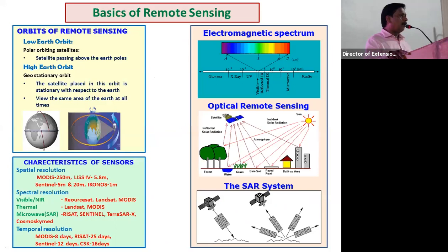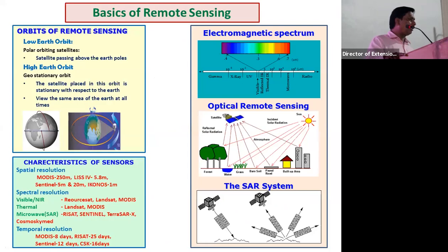For your information, I am covering the basics of remote sensing. Most of you know that satellites are used for assessing objects over the air. There are two types of satellites. One is low orbiting satellites, used for remote sensing observations, placed at a height of around 600 to 900 km over the earth's surface.